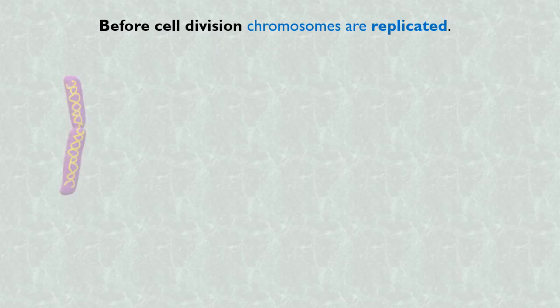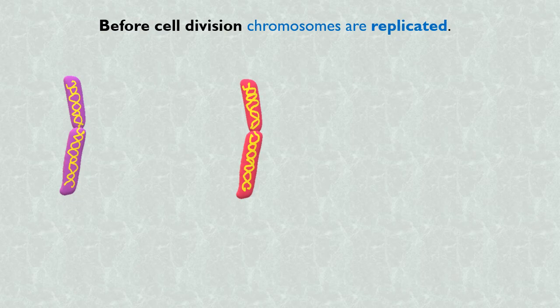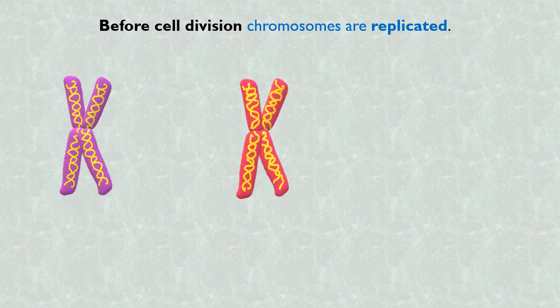Let's say these are two chromosomes in the nuclei of a eukaryotic cell. Each of these replicate. This means we have now two identical copies of each chromosome.